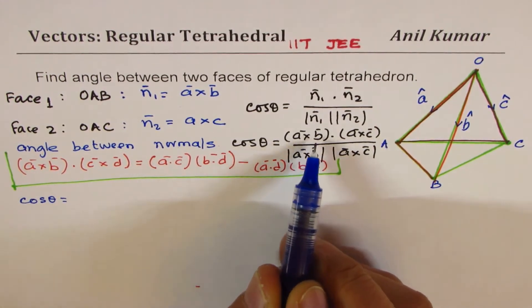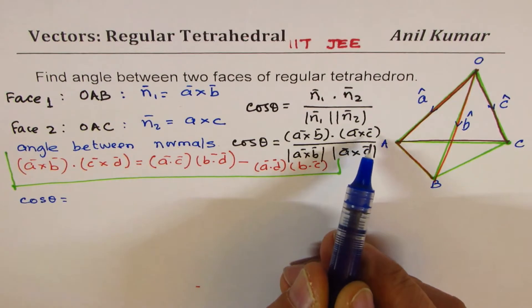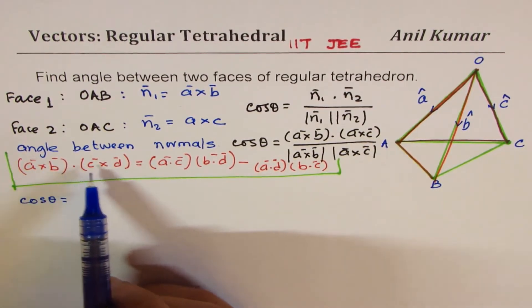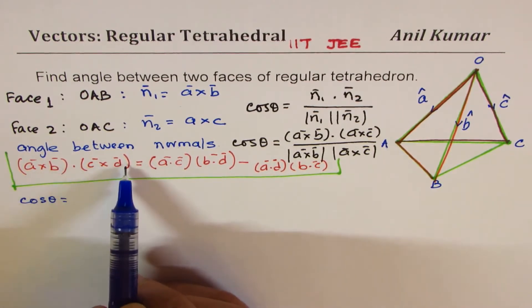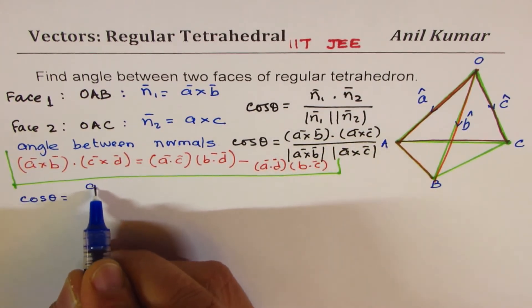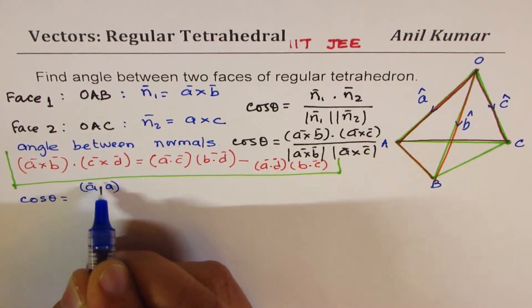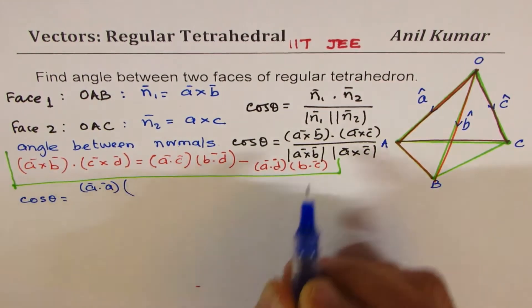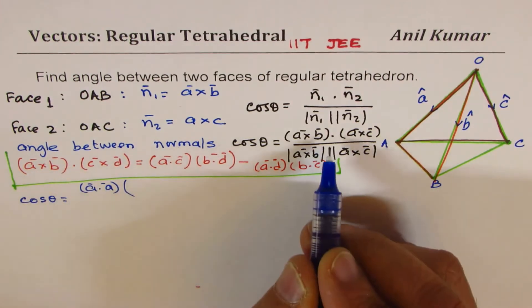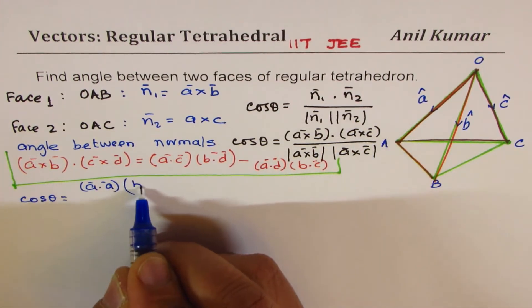So we have A×B dot A×C. If you see the formula, A×B dot C×D is AC. These are the first terms and the second terms. So in this case, it becomes (A·A)(B·C).